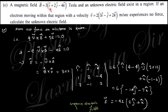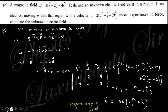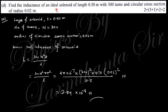Next: a magnetic field B (in tesla) and an unknown electric field exist in a region. If an electron moving in this region with a given velocity experiences no net force, the net force is q(v × B) plus the electric force. For an electron the charge is −e, and since the net force is zero, E equals v × B. Taking the cross product gives the expression for the electric field.